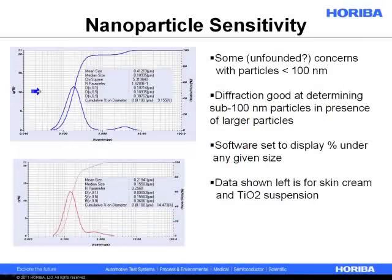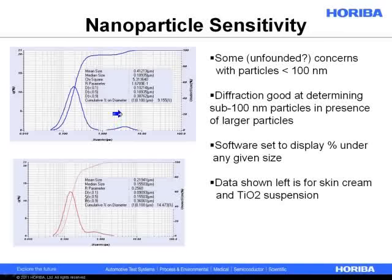Diffraction is probably the best technology to use when you're looking for very small particles that are also in the presence of large particles. If the sample only contained particles up to about 800 nanometers, dynamic light scattering might work, but when particles extend up to 8 microns, it rules out other light scattering techniques. In this specific example, we're looking at cosmetic creams that have particles less than 100 nanometers. There's always a concern about whether nanoparticles can get into the bloodstream when applied to skin — it's very much a diffraction-only application.